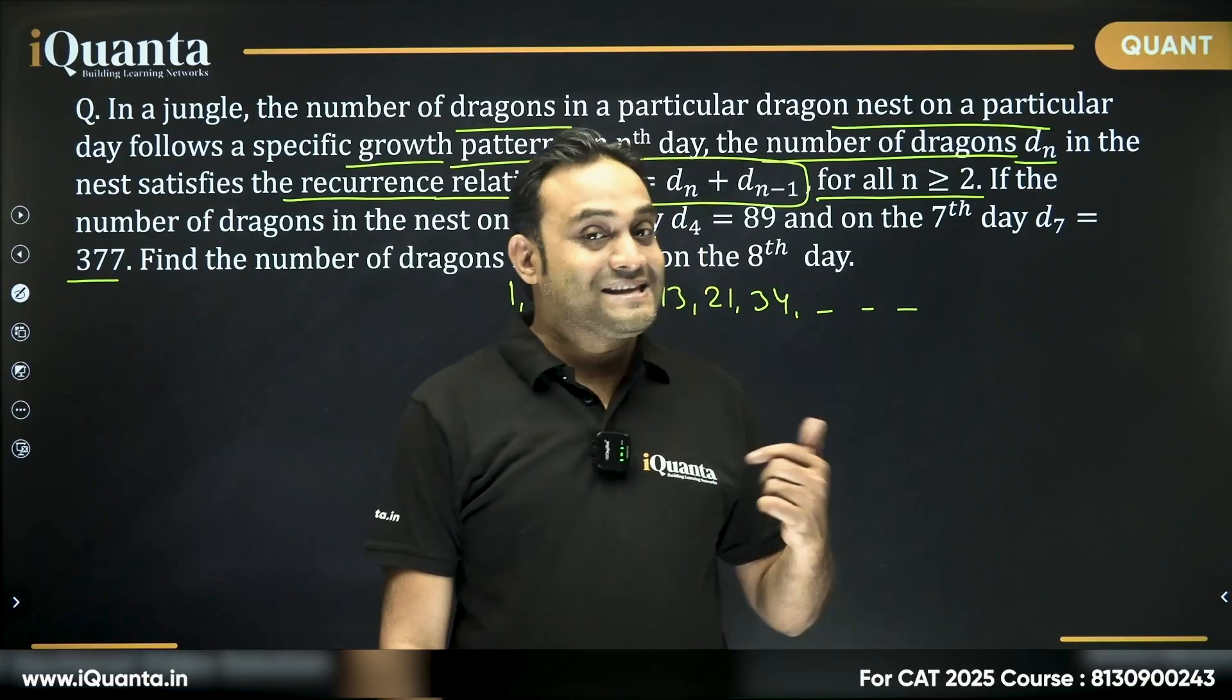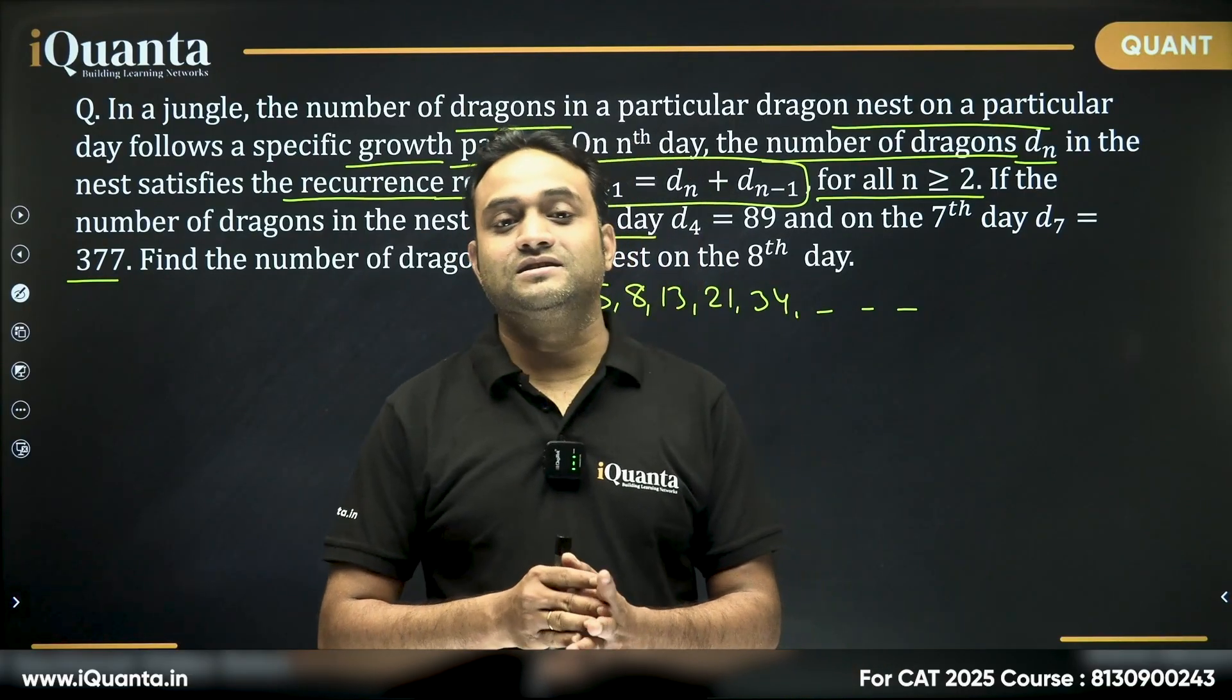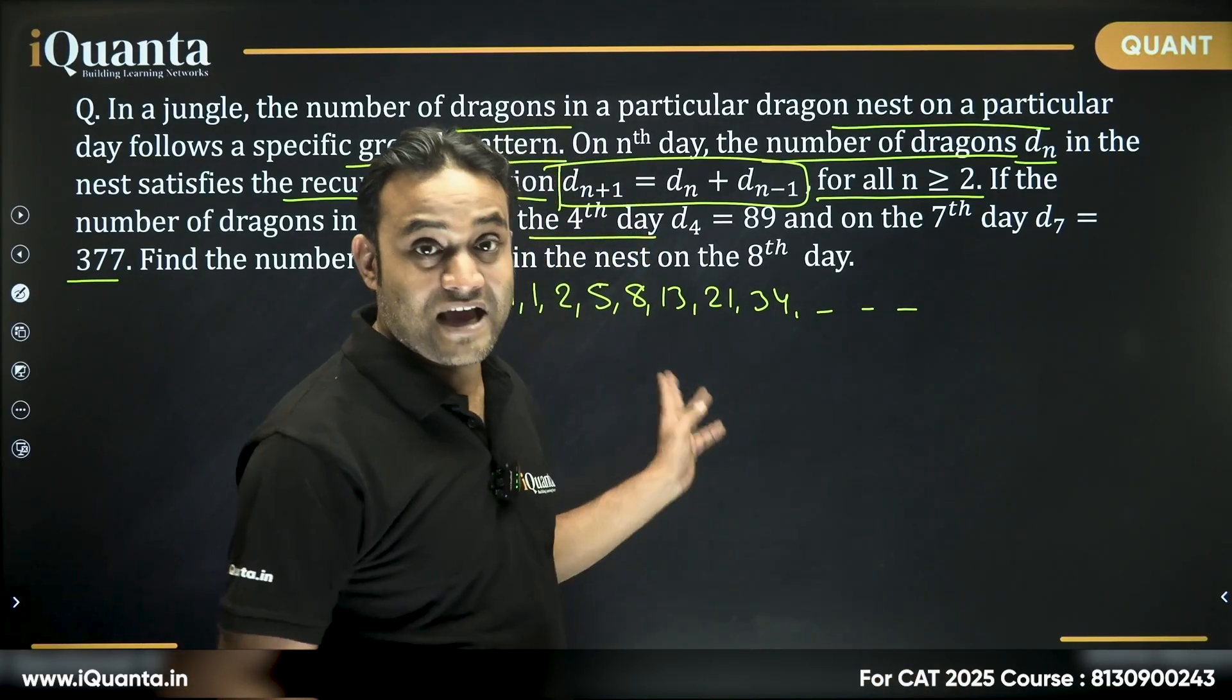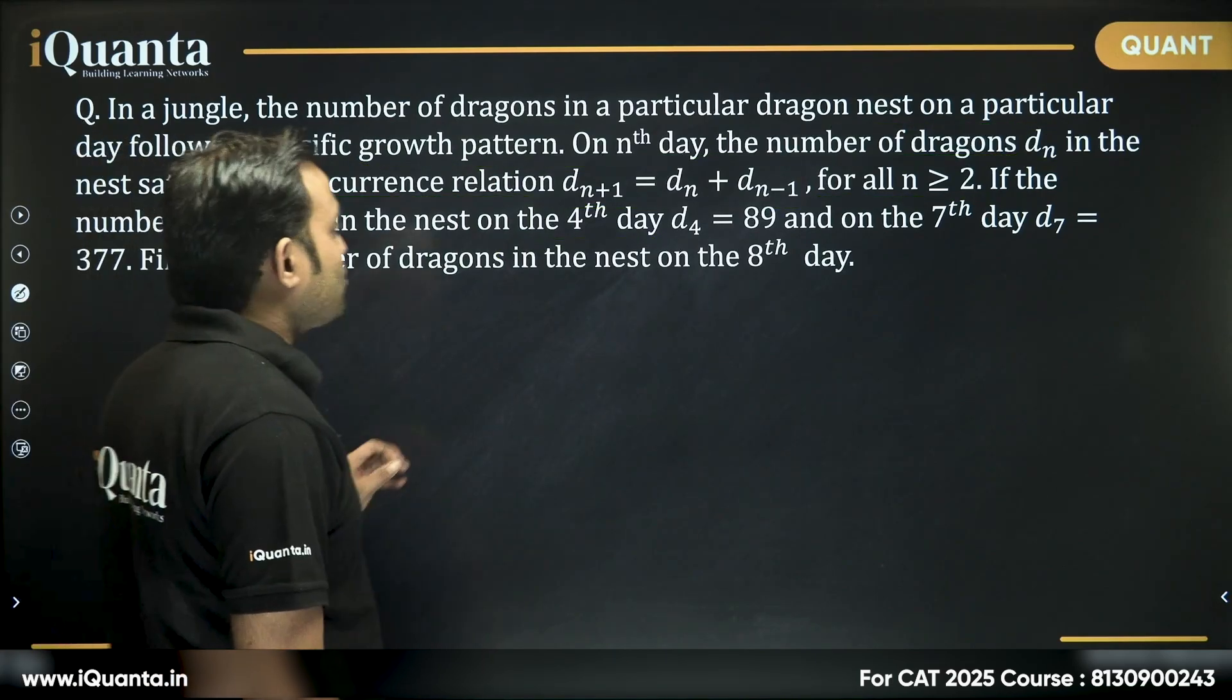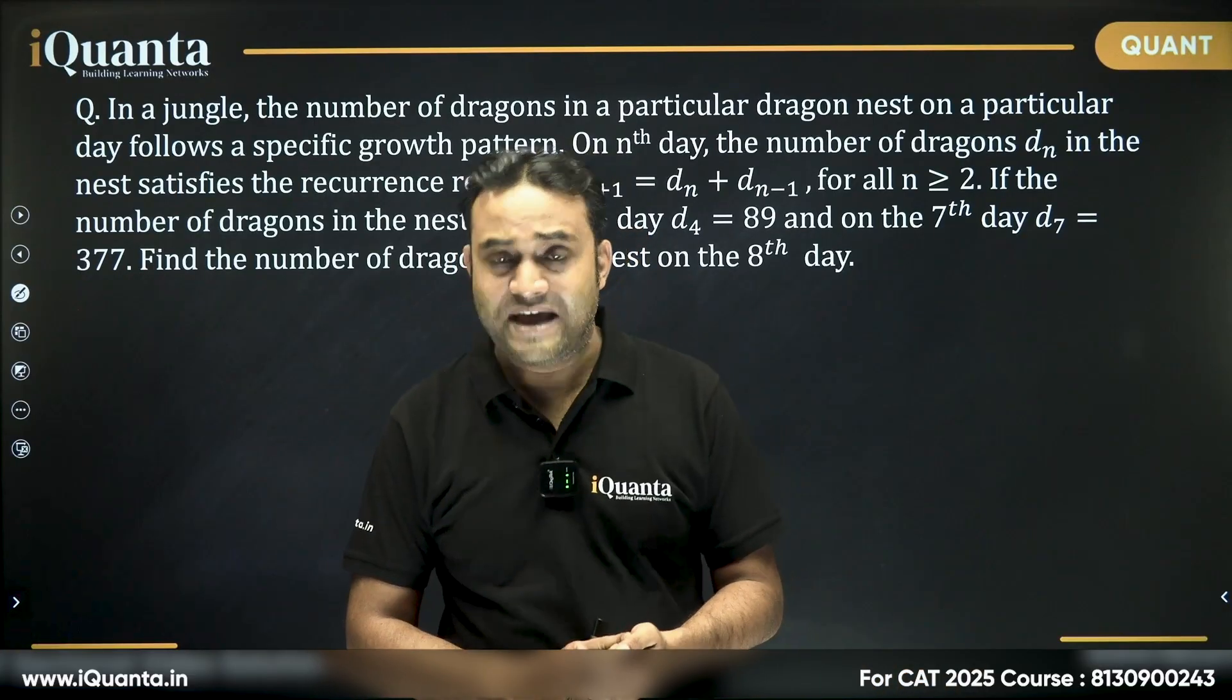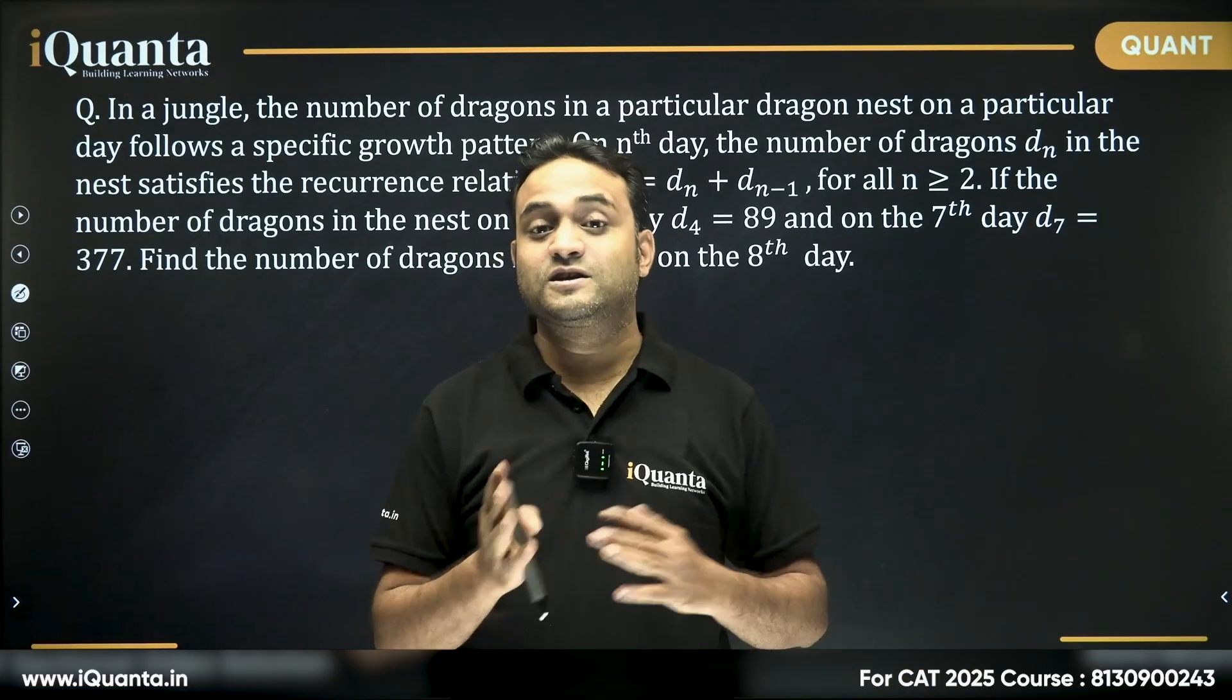But in this series, the pattern is saying that every new term is sum of the previous two terms, but they are not the same values as it is. So, how do we start in this? We don't need to start with day one, that number of dragons on day one is x, number of dragons on day two is y, then third day, it will be x plus y,